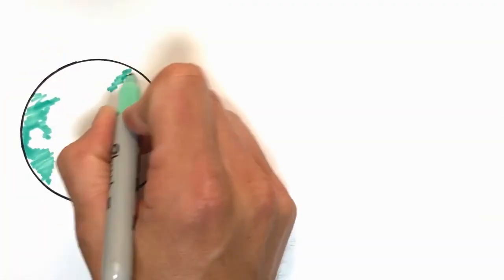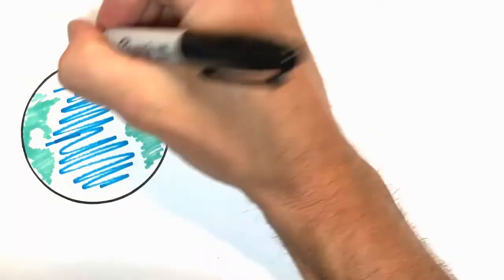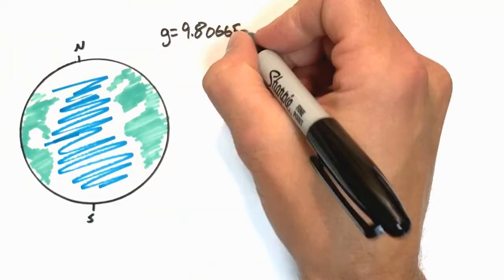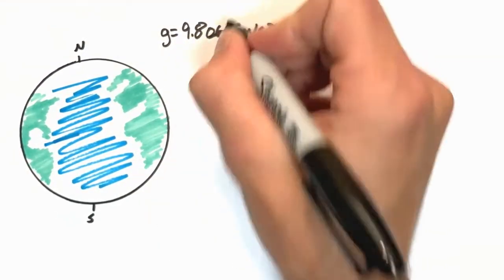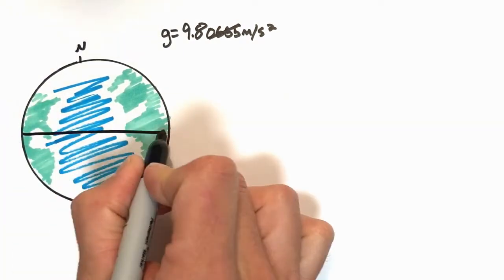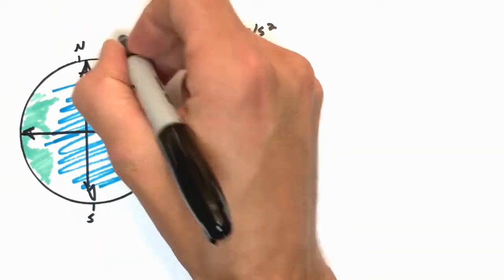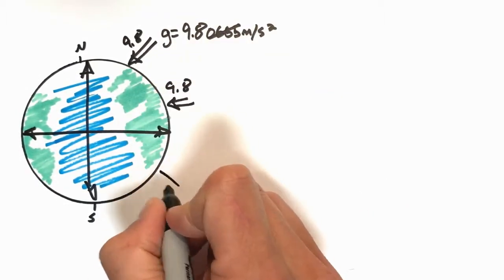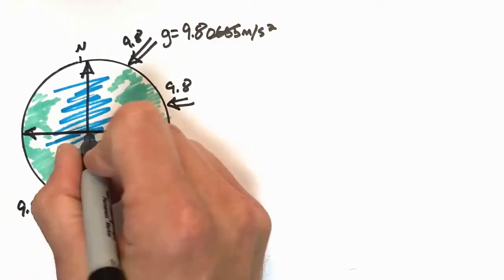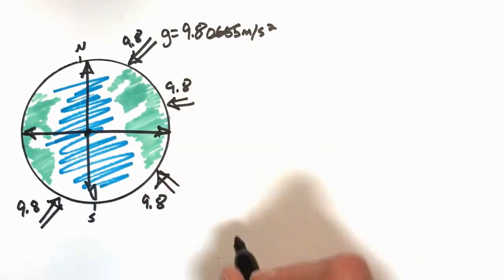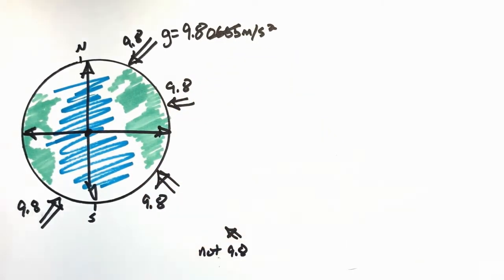Let's take a look at the Earth. The acceleration due to gravity on Earth is 9.8 meters per second squared — actually 9.8065, but we don't worry about those last digits. 9.8 is just an average, because the Earth is actually a different distance this way than it is this way. The acceleration due to gravity is always pointed toward the center of the Earth. Farther away, it's less, but we'll worry about that later.